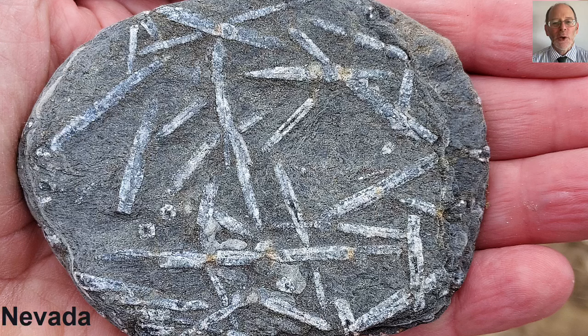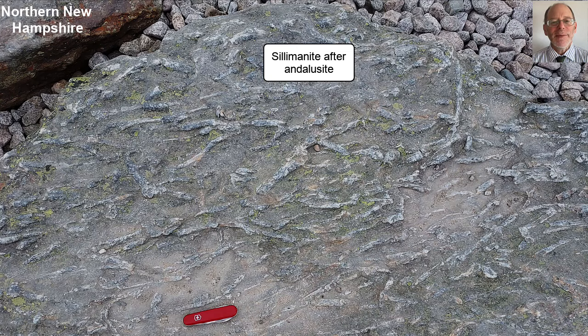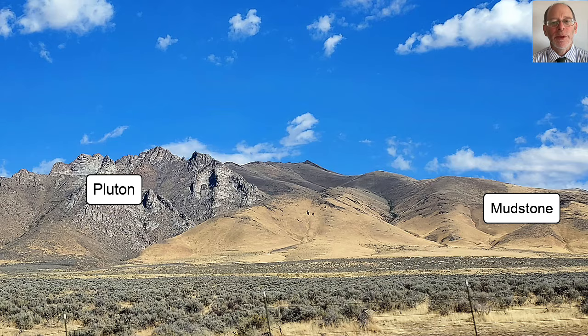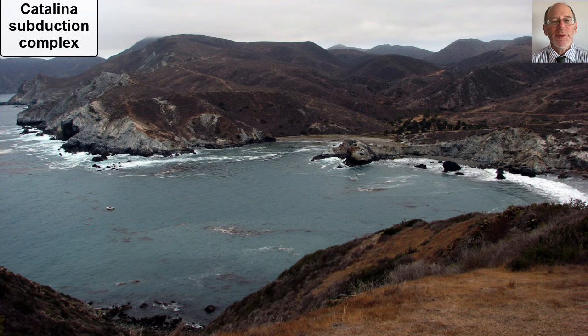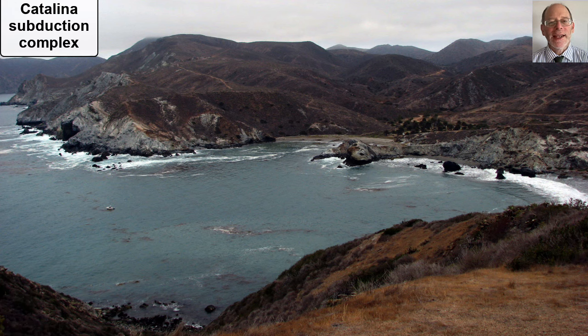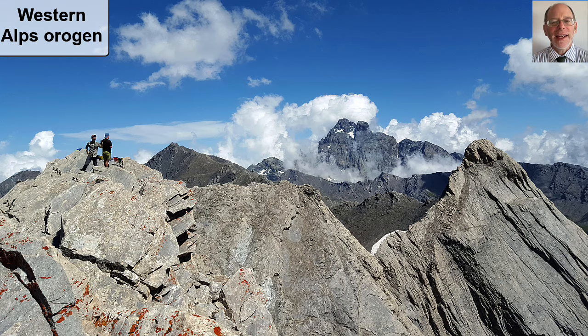Andalusite is low pressure, kyanite is high pressure, and sillimanite is high temperature. When a pluton intrudes mudstones, you get andalusite to sillimanite. Subduction forms only kyanite. When two continents collide, you see kyanite to sillimanite.